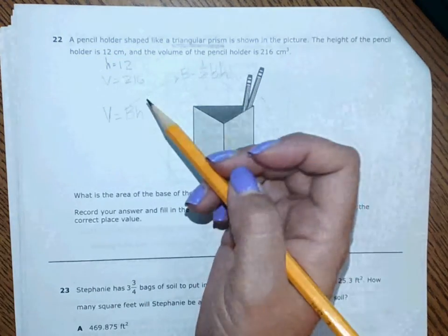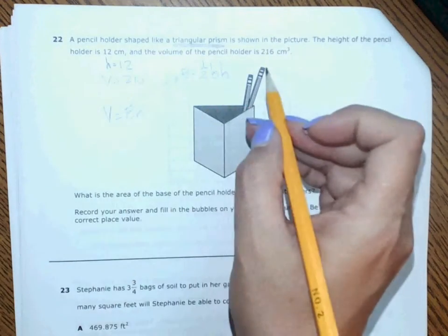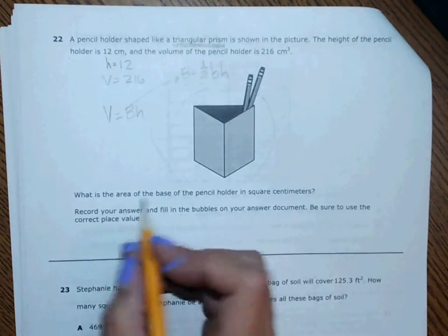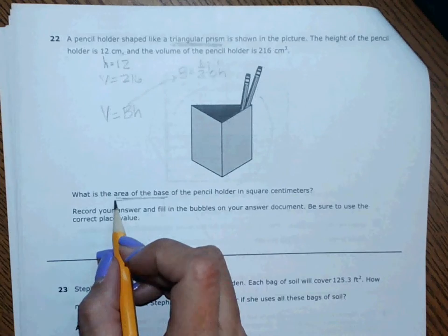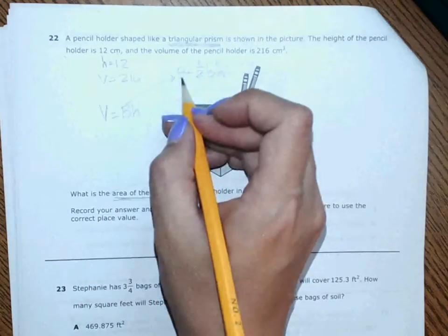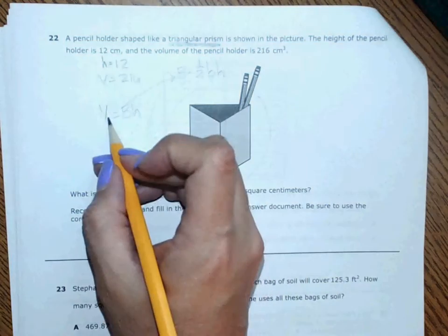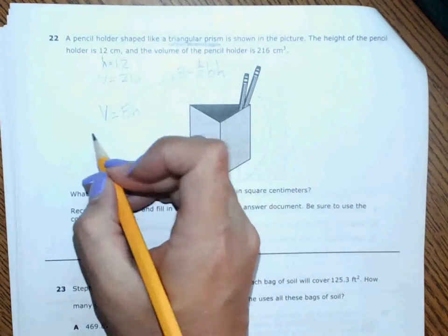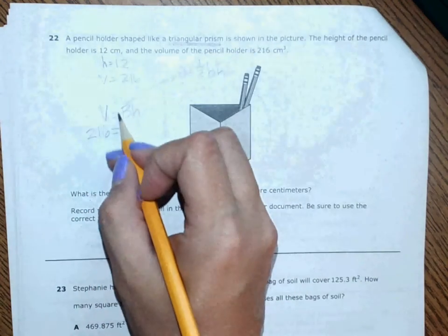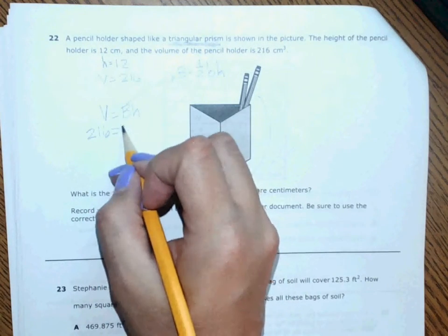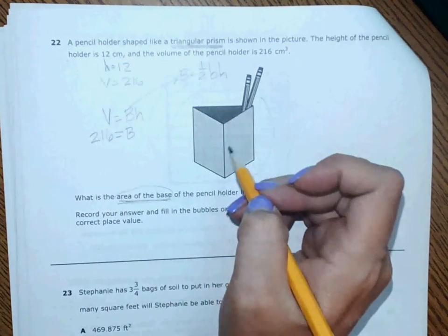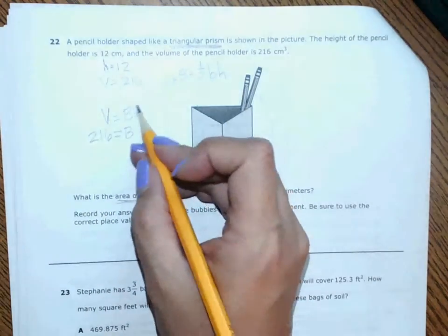Oh I don't even have to solve for that - hello it tells me already the height. Oh I have to keep reading, oh maybe I do. Okay, area of the base is what I'm solving for. Oh okay, I can't solve for this because I don't know enough info. So I'm going to plug in the things I do know, so that's 216 equals - I don't know what this is.